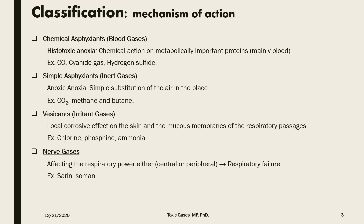The third type would be the vesicants or irritant gases. They produce a corrosive effect on the skin and the mucous membranes of the respiratory passages, leading to affecting the respiratory mechanisms. Examples for these kinds of gases would be chlorine, phosphine, and ammonia. So these are irritant gases.